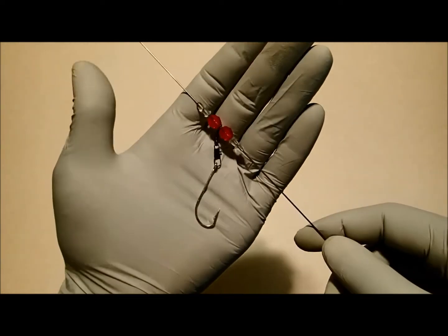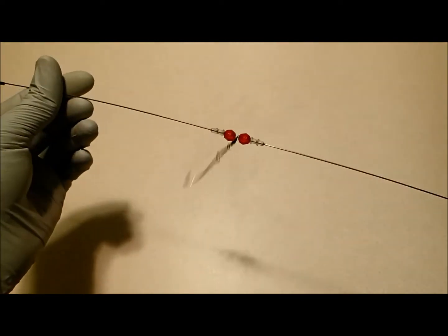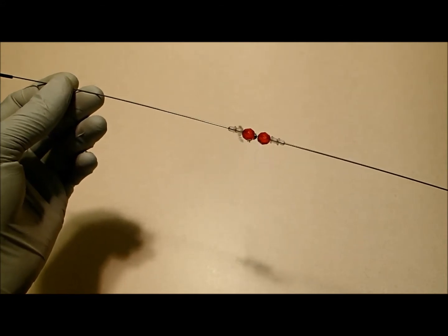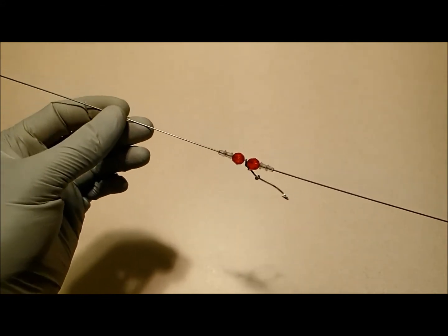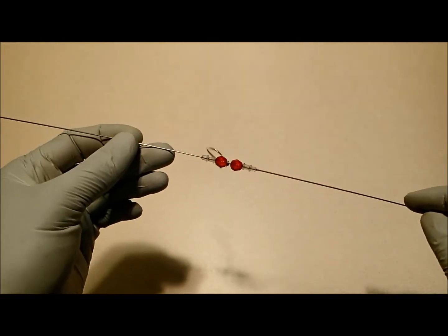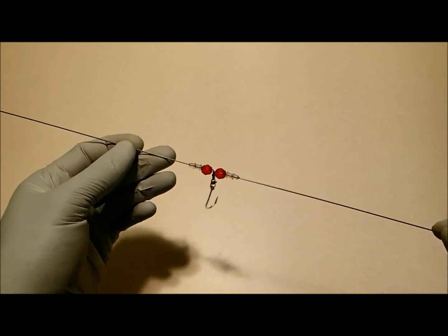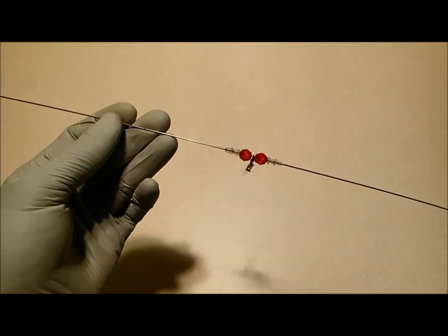All it can tangle with is the actual wire here, and the tangle really comes undone very easily. How many times have you fished thinking that you have the ultimate presentation only to reel your line in and find out that your hooks were tangled? Well, that will not be the case with this rig.